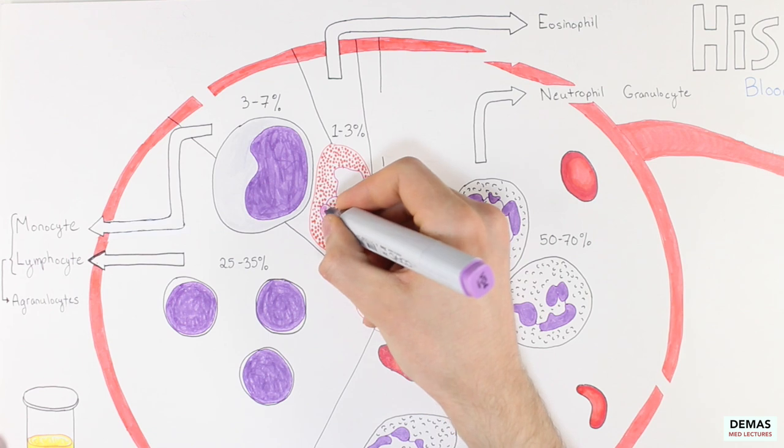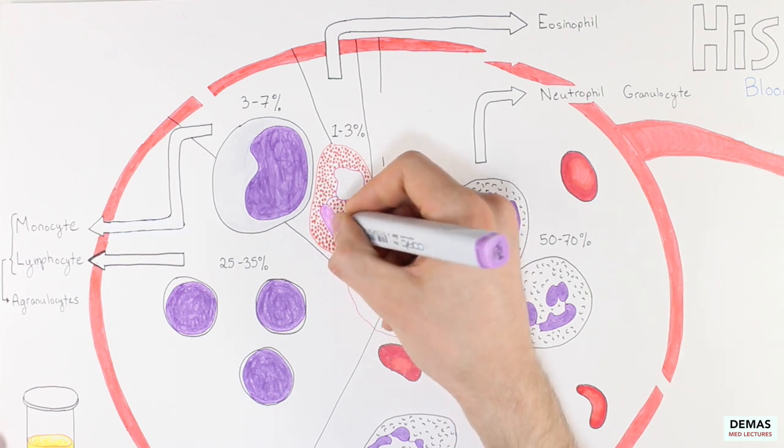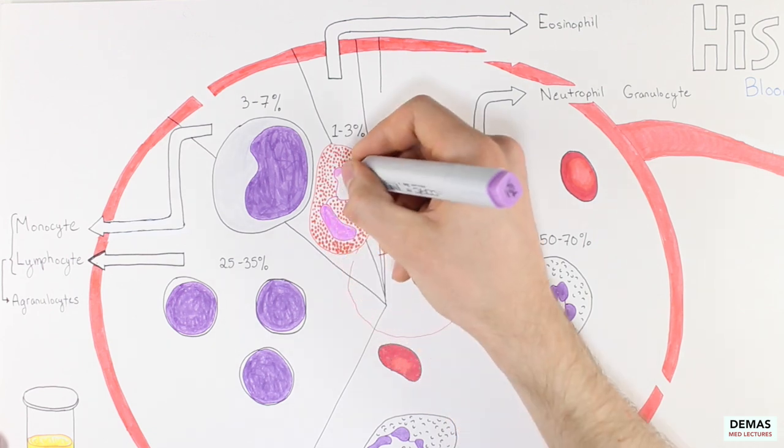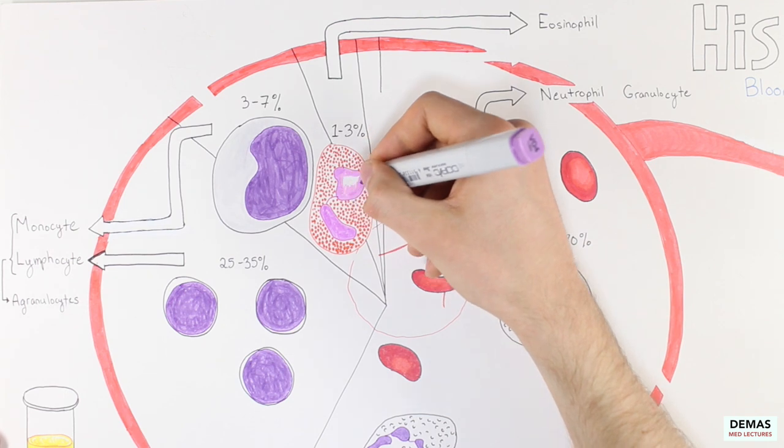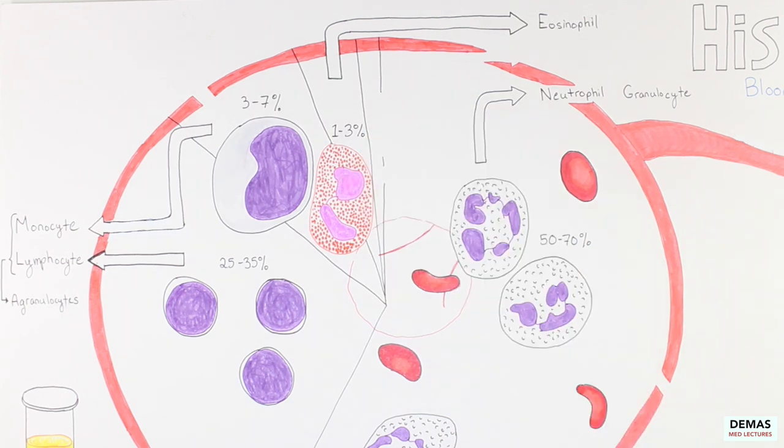You might at first confuse eosinophils with neutrophils due to their similar size and presence of granules, but realize that eosinophils have a bilobed instead of a three to five lobe nucleus and their granules are bright pink and orange compared to the neutral staining granules of neutrophils. Eosinophils are important for phagocytosis and killing parasites and you will be learning more about this in your immunology lectures.